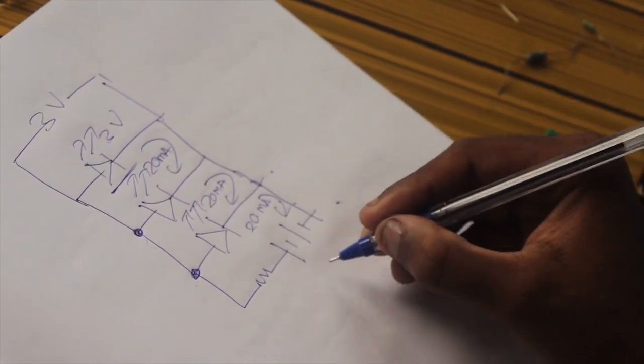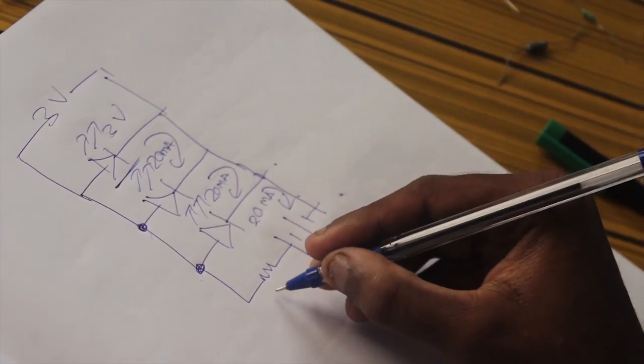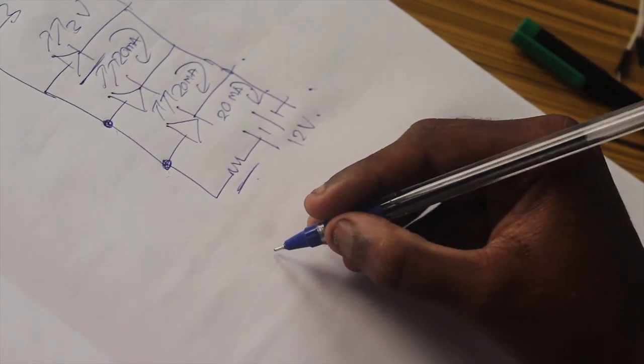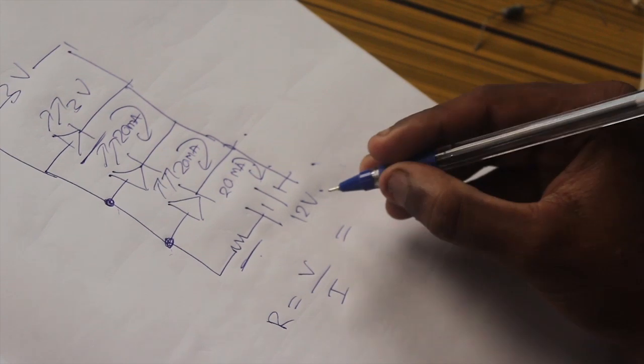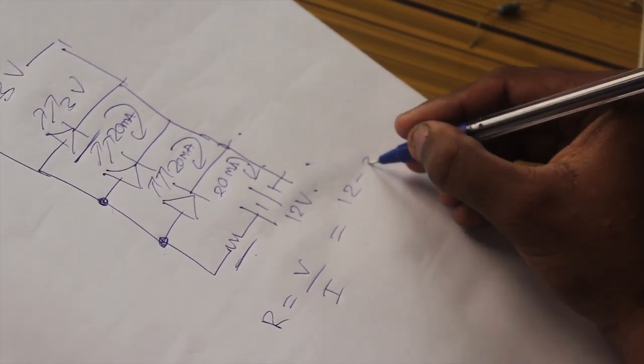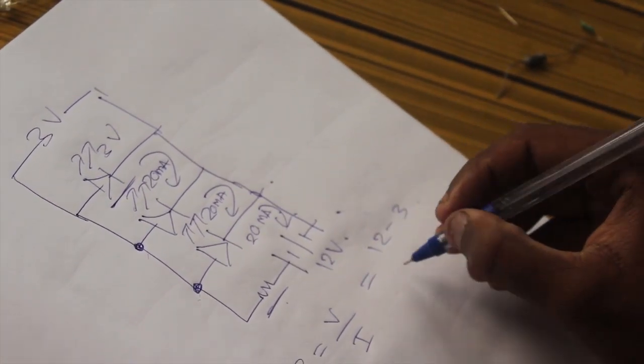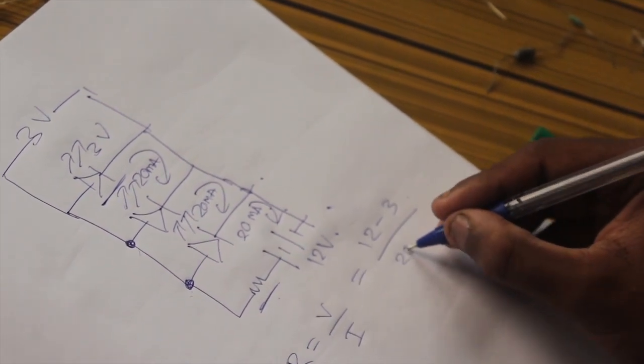Here the supply is 12V and we need to calculate the resistor value. We can use the same formula here. R equals V by I. For V, we use 12 minus 3V because we need to drop 9V across the resistor, divided by 20 milliamps.